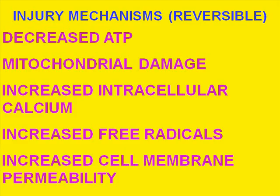Reversible injury mechanisms include decreased ATP or mitochondrial damage without mitochondrial death. A cell may also take up increased calcium — increased intracellular calcium is a result of injury but can be reversible. Free radicals are extremely dangerous, and increased free radicals are a source of injury, but also reversible. Increased cell membrane permeability is likewise a reversible change, though if extreme — such as mitochondrial death or irreversibly increased membrane permeability — these cause cell death.